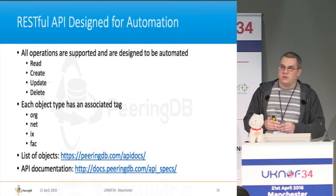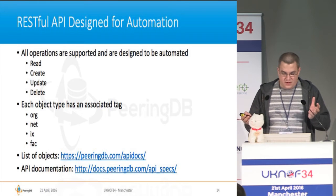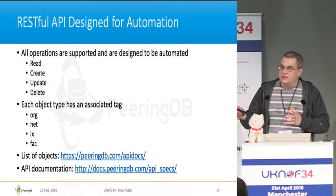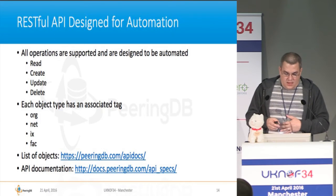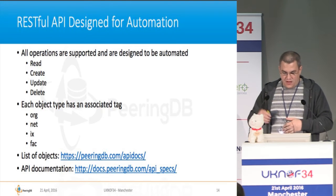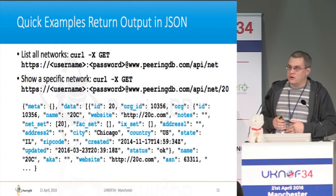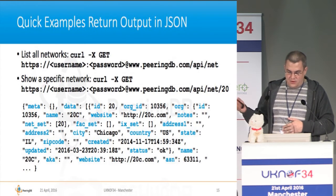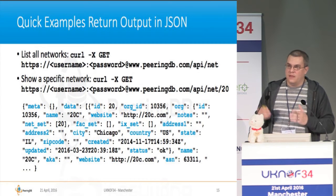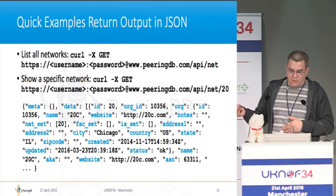The API was really designed for automation — that was a key component. You can do anything with automation that you can do through the web interface: read, create, update, and delete. Each object has an associated tag: org, net, IX, and facility. There's a list of objects and API documentation available. Using curl, you can get the whole list of networks or a particular record, and the output returns JSON-formatted data according to the database schema, making it easy to get information in a particular format.